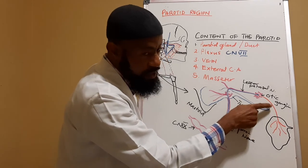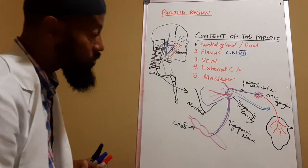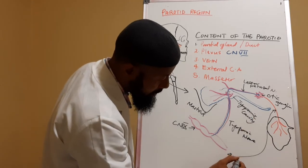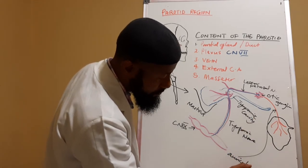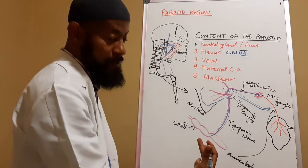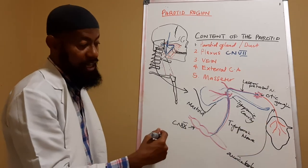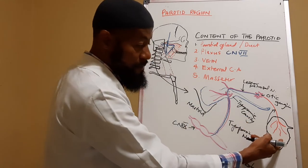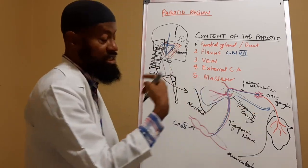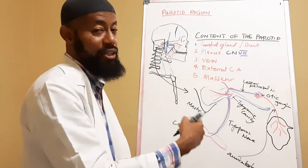After synapsing at the otic ganglion, a postsynaptic parasympathetic secretomotor fiber is conveyed by the auriculotemporal nerve to the parotid gland. So the auriculotemporal nerve does two things: it conveys postsynaptic parasympathetic secretomotor fibers to the gland, and it also conveys sensory modalities from the gland to the central nervous system. The greater auricular nerve, a branch of the cervical plexus, also conveys sensory information.